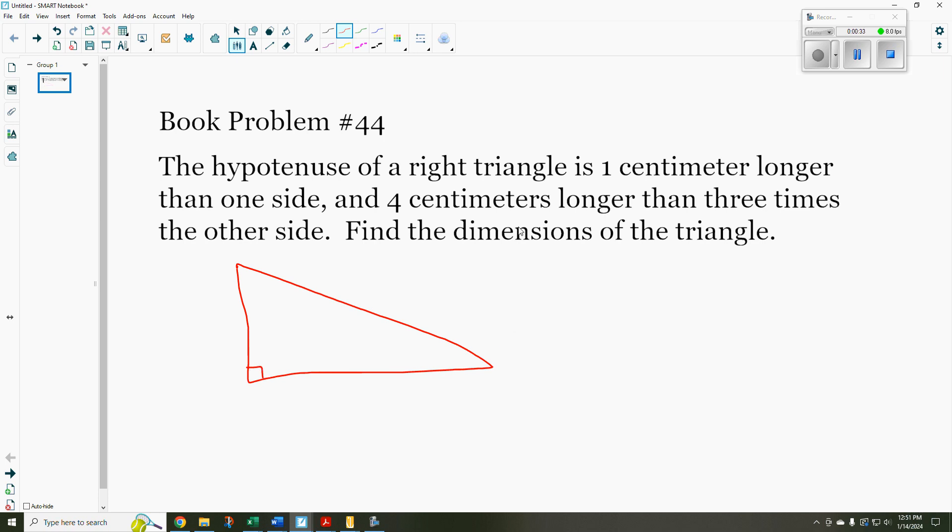If I'm trying to find the dimensions, I am pretty sure that I'm going to use the Pythagorean Theorem, a squared plus b squared equals c squared. So let's call this side a, this side b, and this side c. And for purposes of calculating this, I'm going to use x. So I'm going to say c is equal to x. I thought I'd start with the hypotenuse. The hypotenuse of the triangle is one centimeter longer than one side. So that means b is x minus 1. So the hypotenuse is one centimeter longer than side b.